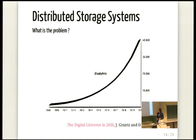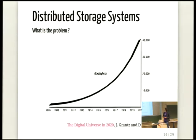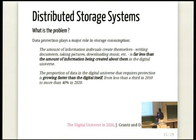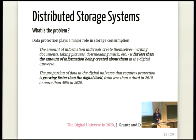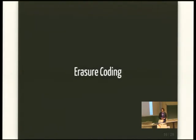So what's the problem with that? There is a curve showing that the amount of data is really growing, and one of the key points is that data protection plays a major role in this fact. So what we want to do is find a way to reduce this storage consumption, but still provide data protection. What we propose is to use erasure coding, which is an alternative technique to data replication.